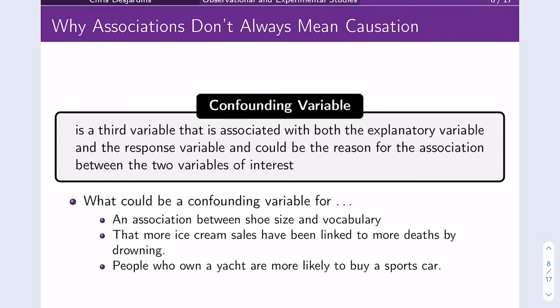Let's talk about why associations don't always mean causation. The real reason is that there's going to be another variable that is actually causing the relationship between the two variables that we see. A confounding variable is what that variable is called — it's a third variable that is associated with both the explanatory variable and the response variable, and could be the reason for the association between the two variables of interest.